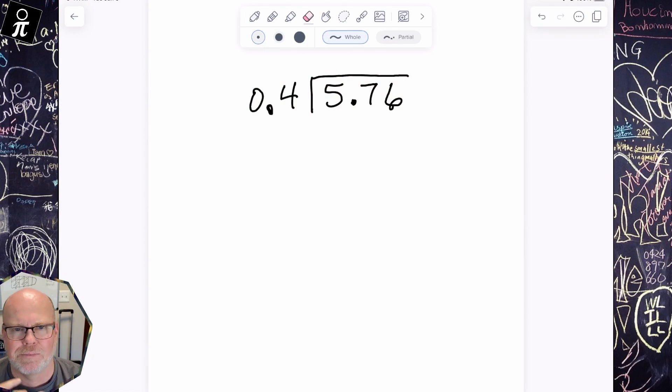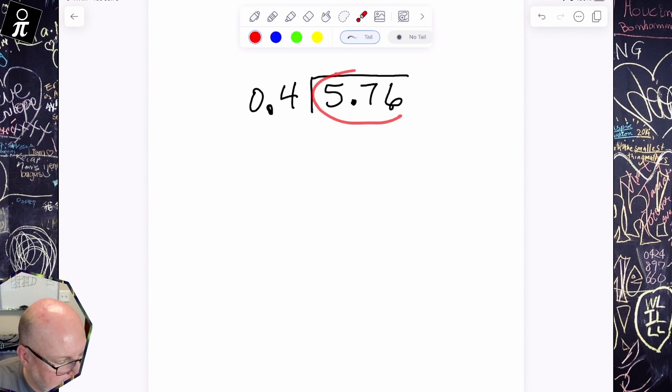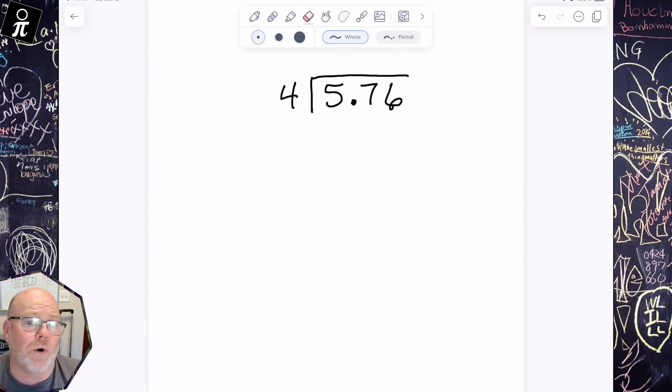And before we actually divide this 5.76 divided by 0.4, let's talk about this. So first off, let's remind ourselves, what does division mean? Well, there's one definition of division that means take 5.76 and divide it into equal groups. Now, if this was just a plain old 4, that would be easy. 5.76 cut into four equal parts. What is the size of each part? Okay, so that makes sense.